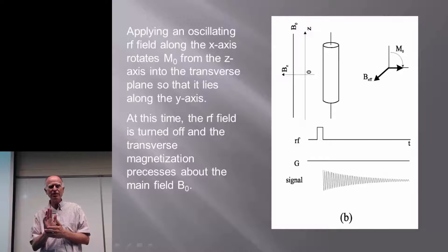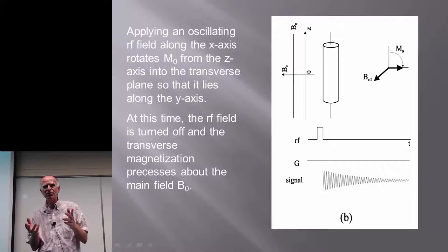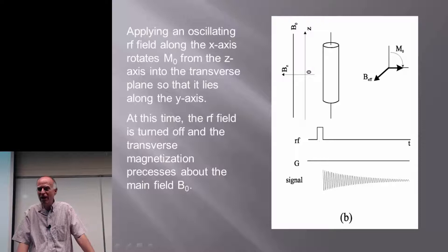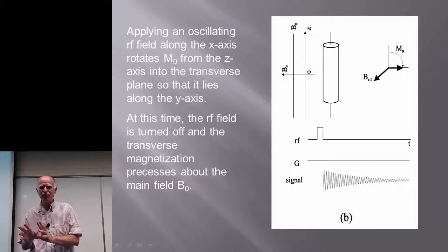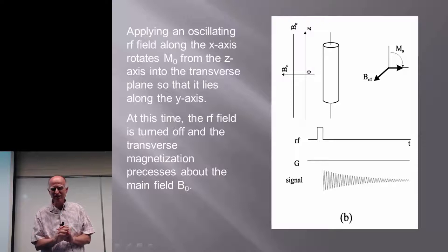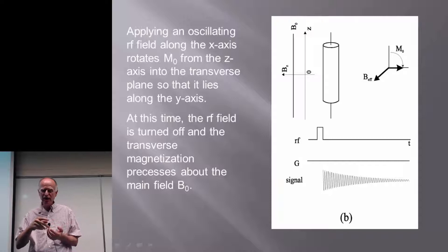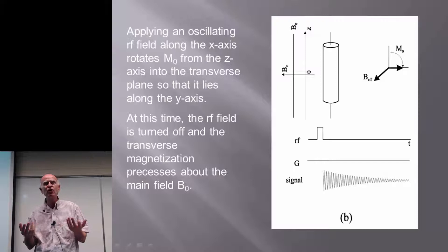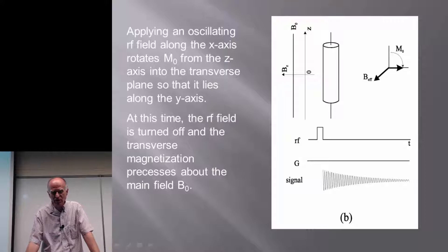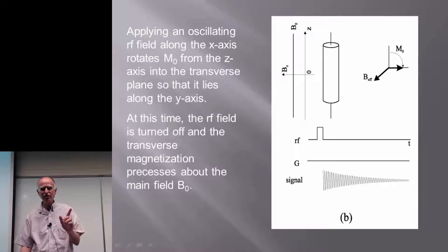Once I'm in the rotating reference frame, I can actually interact with that spin because we're now both precessing the same way. Just imagine you're getting on a merry-go-round — now you can talk to that person. But when that person is spinning at 42.6 megahertz at one tesla, it's impossible to talk to him. You have to jump into the rotating reference frame in order to interact with him. At that point, if I want to push the spin down 90 degrees, I can do that, because when you have current in a coil, you create a magnetic field. In the rotating frame, that oscillating field becomes a constant magnetic field. So if that effective magnetic field sits along the y-axis, it will rotate the magnetization down from the z-direction into the transverse plane.